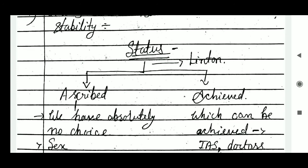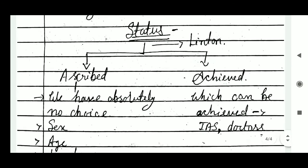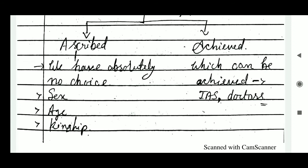Moving on to the types of status. According to Ralph Linton, there are two types of status. First is ascribed status — generally those in which we have absolutely no choice, like sex, age, kinship, etc. Second is achieved status — these are those in which we have options and choices, like becoming a doctor, and are attained based on our potential, intelligence, and knowledge.